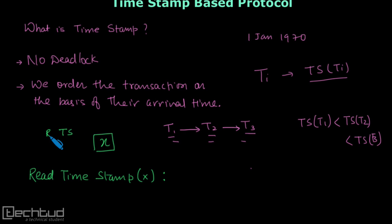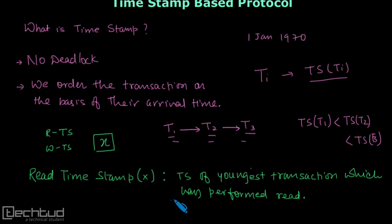One is the read timestamp and the other is the write timestamp. The read timestamp is the timestamp of the youngest transaction which has performed a read operation on variable X.